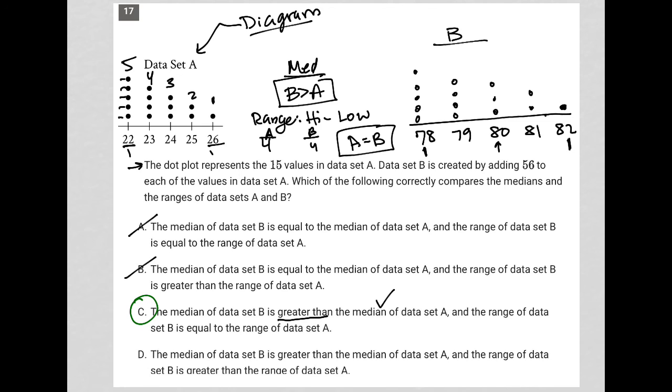I like to read all of them just to make sure I feel confident about myself. Choice D says the median of data set B is greater than median of data set A. That's true. And then it says the range of data set B is greater than. No, the range is not greater. So that's out. So I'm confident choice C is the correct answer.